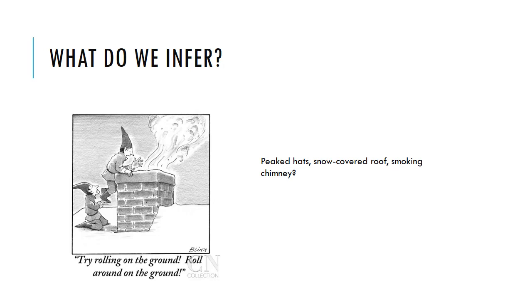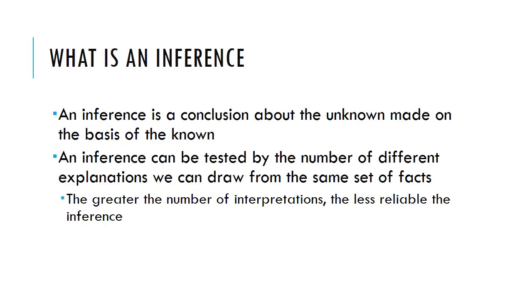Now we don't actually see this, but all of the evidence that we do see — the peaked hats, the snow-covered roof, and the smoking chimney — indicate to us that there could only be one person who is down there. What exactly is an inference? An inference is a conclusion about the unknown made on the basis of the known, just like in the previous slide where we saw all of those visual indicators that Santa was down the chimney.